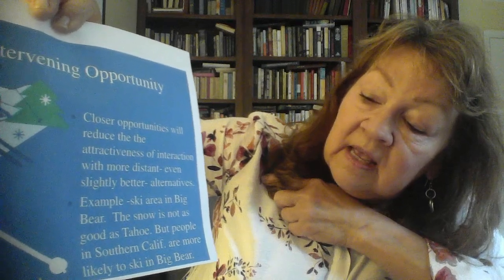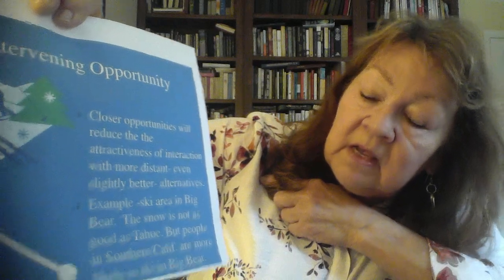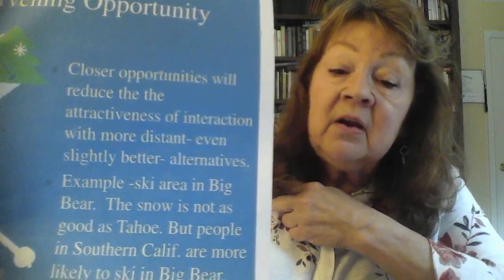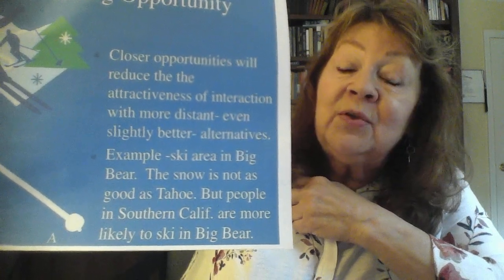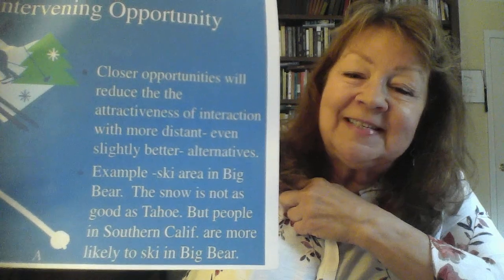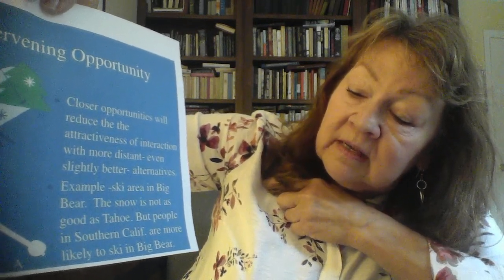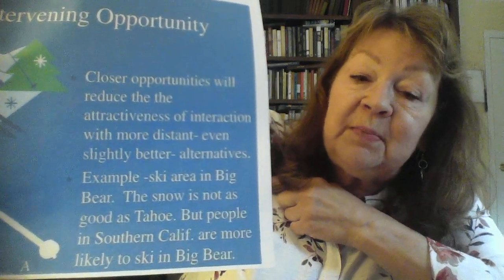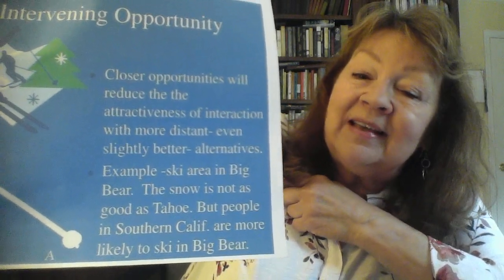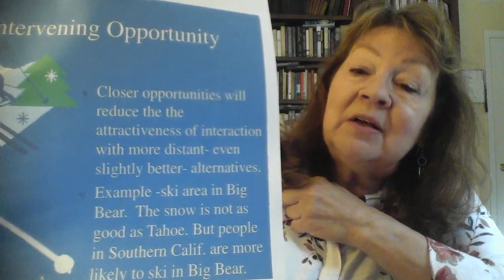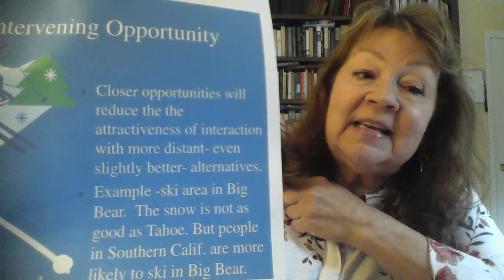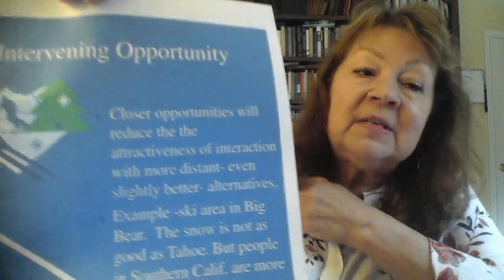Another example is based on the West Coast: there is a ski area in Big Bear. While the snow is not as good in Big Bear as it is in Tahoe — where the powder is wonderful — just the fact that Big Bear is much closer for Southern California residents means you're more likely to go to Big Bear. It's almost as good as the powder in Tahoe, but it's a whole lot closer. So the intervening opportunity is there. As you can see from these examples, many factors influence complementarity, transferability, and lack of intervening opportunities.